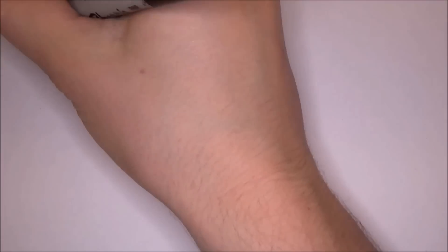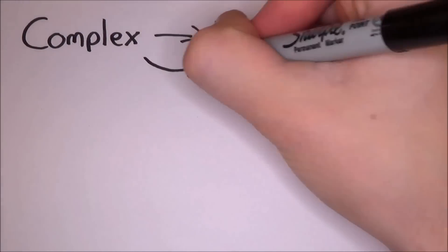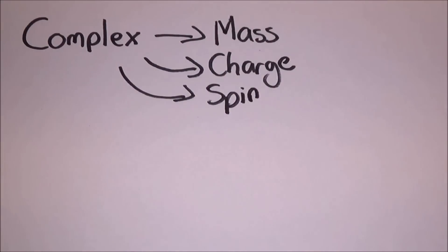The reason particle physics is so complex is because there are so many properties, like mass, charge and spin, just to name a few, and each of these will order them in a different way.